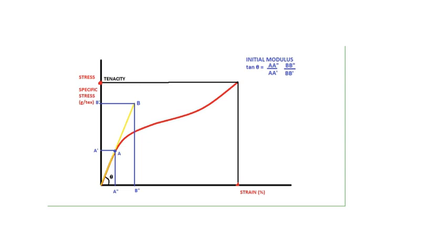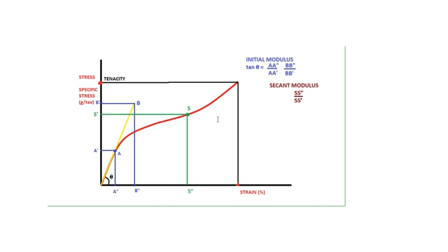Now let us try to understand secant modulus. Secant modulus is calculated at any point on the curve. At point S, it is S'' divided by S' — that is, S'' is the stress and S' is the strain at that point. You can take any point — a green color spot or any point on the curve. So secant modulus is S'' divided by S'. In the initial region we get the initial modulus, and at any other point on the curve we get the secant modulus.